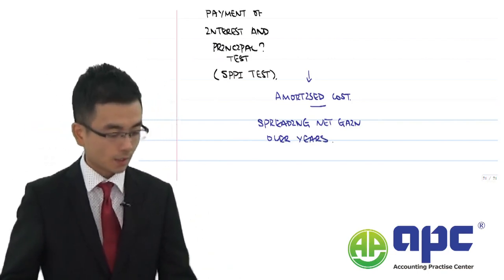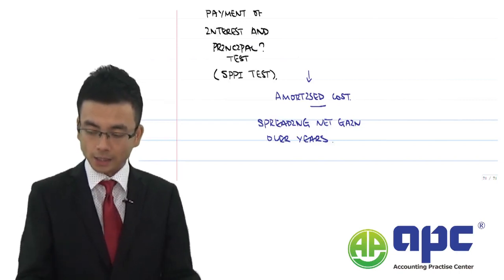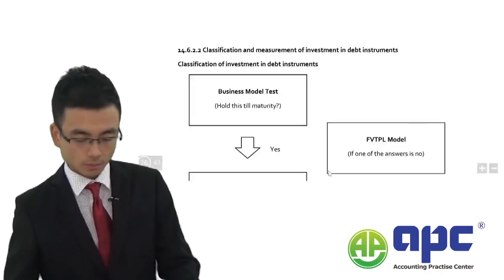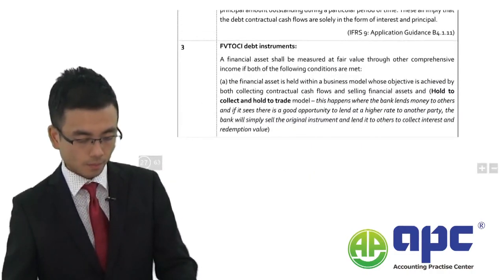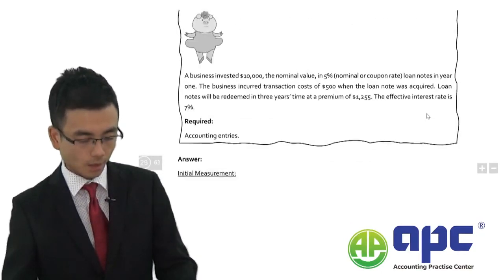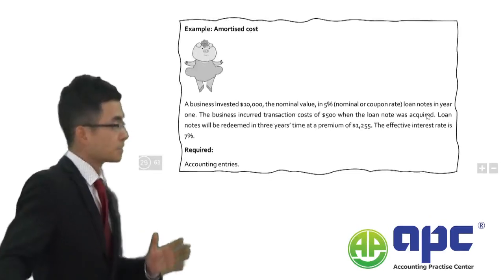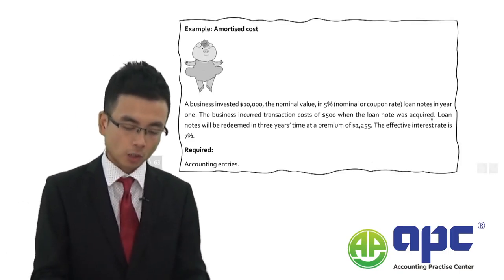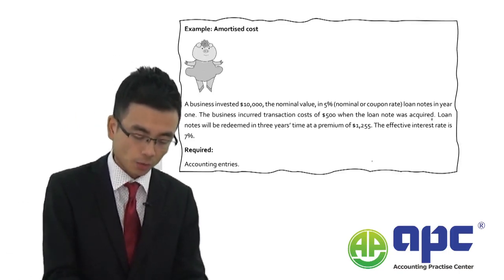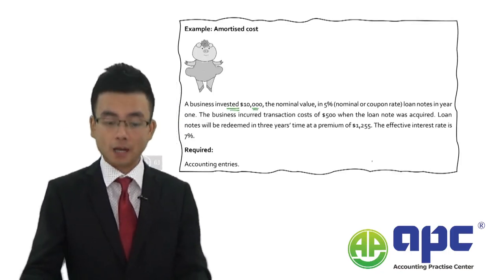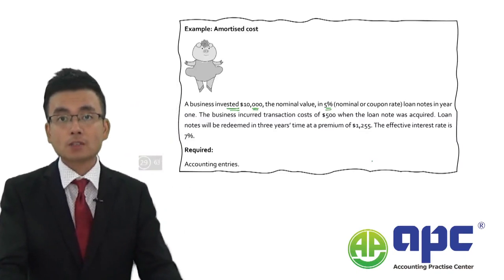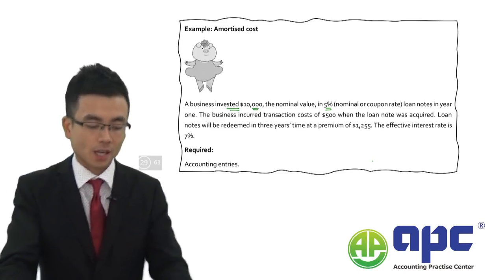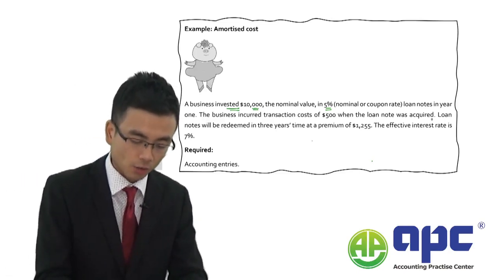The best way is to work through an example. A business invested $10,000 nominal value at a 5% coupon rate long note in year one. The 5% is based on $10,000 to calculate the coupon interest received each and every year, giving $500 per year.